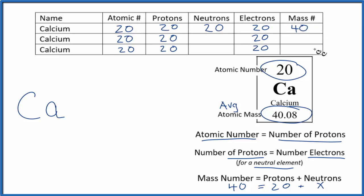That makes sense because this is the average atomic mass. It averages the mass for the isotopes. Most of them are 40, so this number is pretty close to 40.